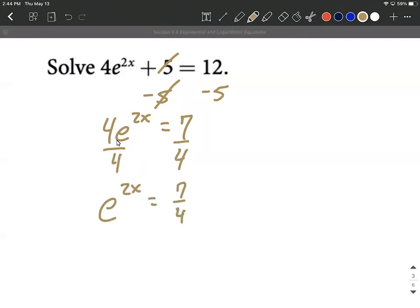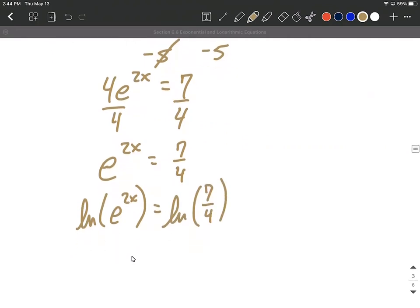At this point, we're going to want to apply a logarithm to both sides. Again, with e in our base here, we're going to utilize a natural log for both sides. And you'll get used to this that whenever you have e as the base, you want to use a natural log because we're going to get really nice canceling out on the left-hand side. So we'll have 2x equals natural log of 7 fourths.